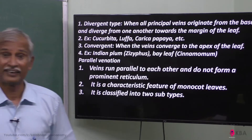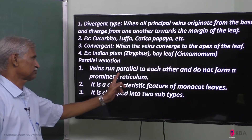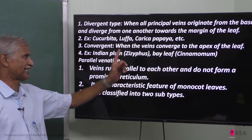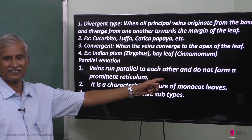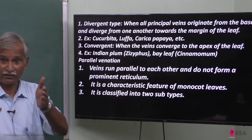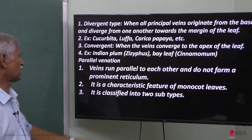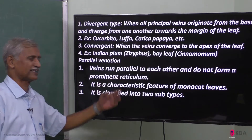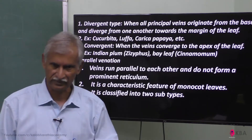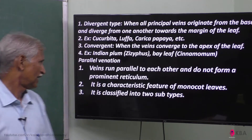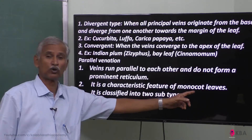In the parallel venation, veins run parallel to each other and do not form a prominent reticulum — that is, no network. It is the characteristic feature of monocotyledons.